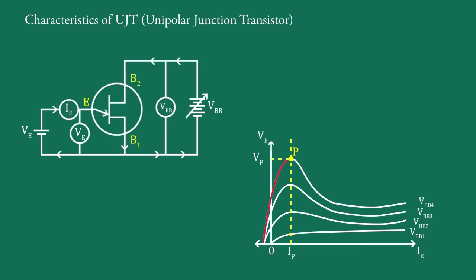This is a negative resistance region of the curve, because with increase in IE, VE decreases.